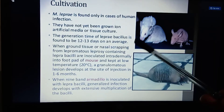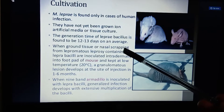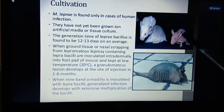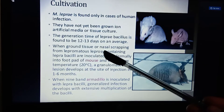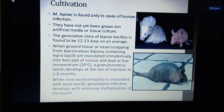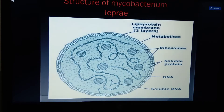The samples used for cultivation are nasal scrapings or skin samples from different parts, inoculated intradermally or subcutaneously. Armadillos are the animals used in this cultivation process. This is how cultivation of Mycobacterium leprae is carried out.